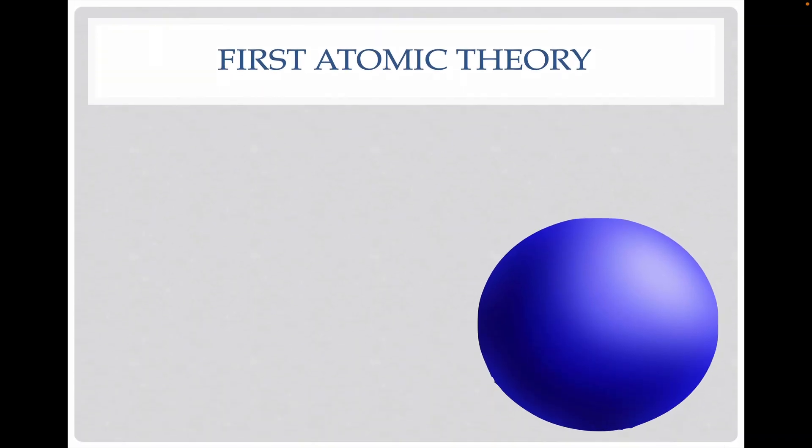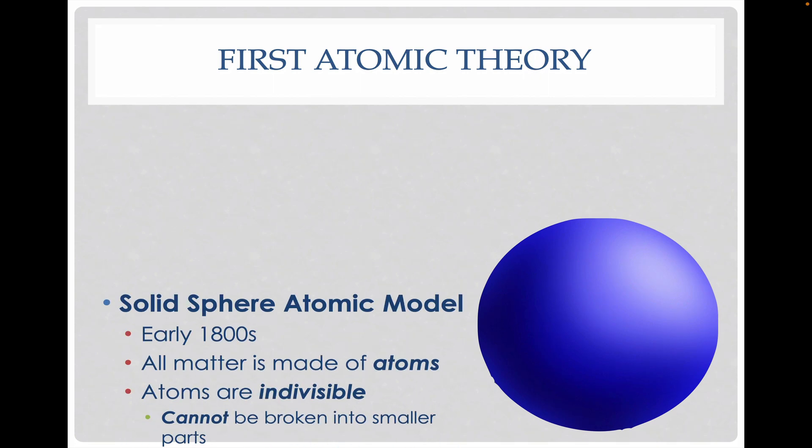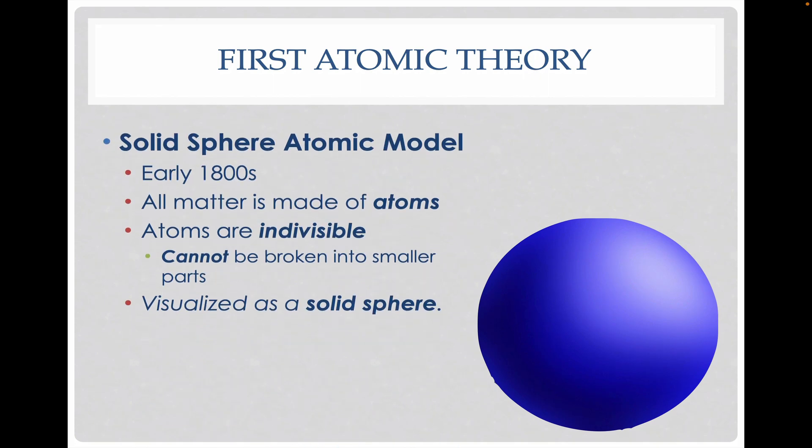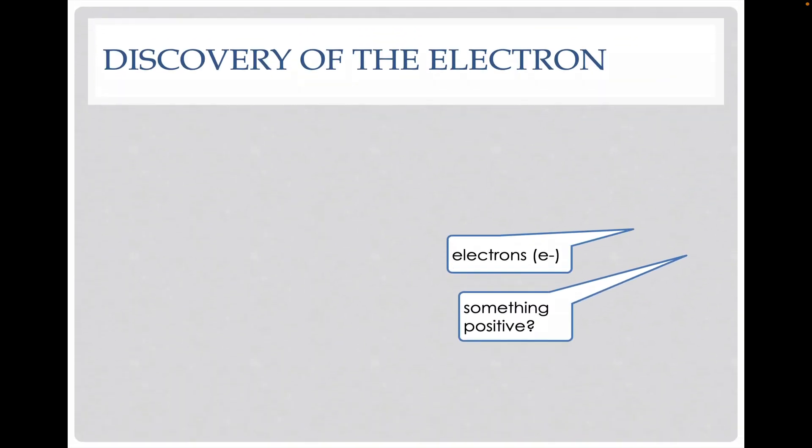First of all, we're going to go through different atomic theories. The first atomic theory was called the solid sphere atomic model. It was in the 1800s and basically they just thought atoms were indivisible and they couldn't be broken into smaller parts, so we kind of saw it as just a solid sphere.